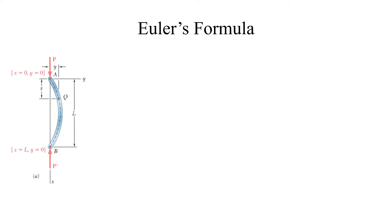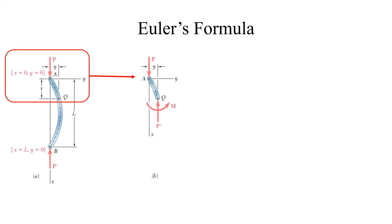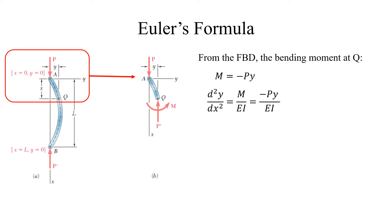Euler's formula. Consider column AB with a section cut at Q, at distance x from A. From the free body diagram of section AQ, we derive M equals negative PY, where Y is the lateral distance at Q. From the Euler formula, d²y/dx² equals M over EI. Substituting the moment equation into the Euler formula, we get d²y/dx² equals negative PY divided by EI.